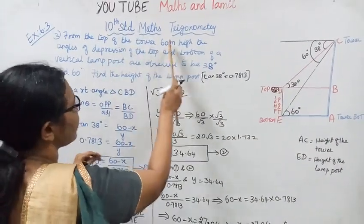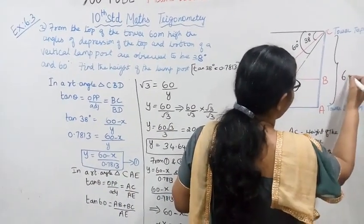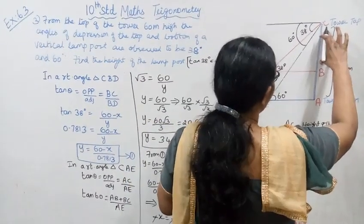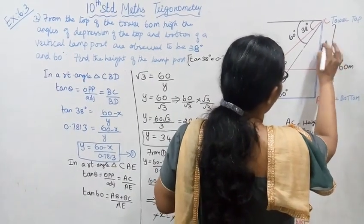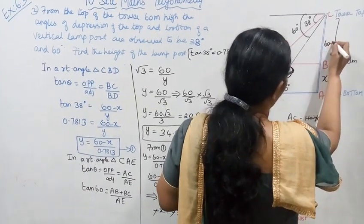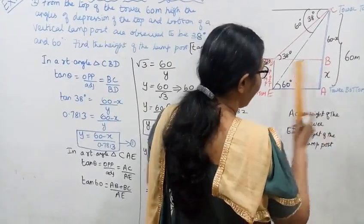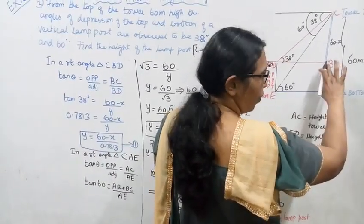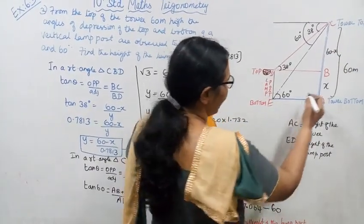This is the top of the tower. The height of the tower is 60 meters. This is the full line. BC is 60 meters. This section is X, so the remaining part is 60 minus X. The height of the lamp post is X, and 60 minus X is the upper portion.